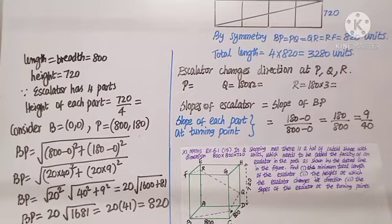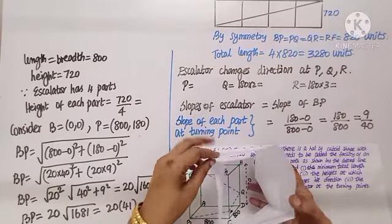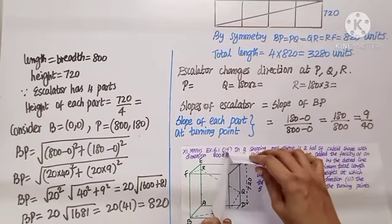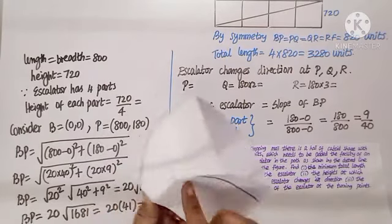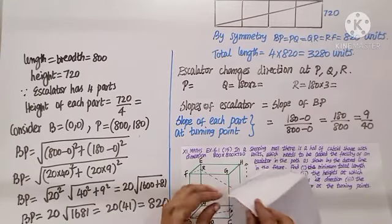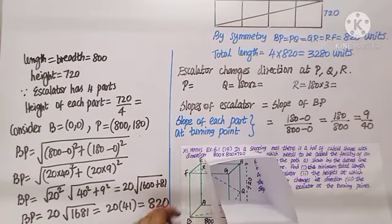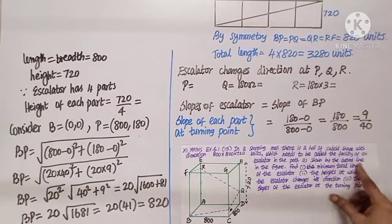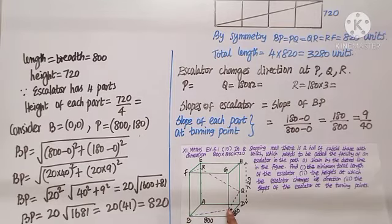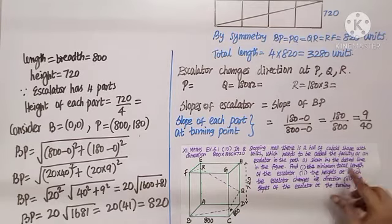Question number fifteen: in a shopping mall there is a hall of cuboid shape with dimensions 800 by 800 by 720. The escalator starts at one end and goes up in four directions to reach the top. We need to find the minimum total length of the escalator, the heights at which it changes direction, and the slopes at the turning points.